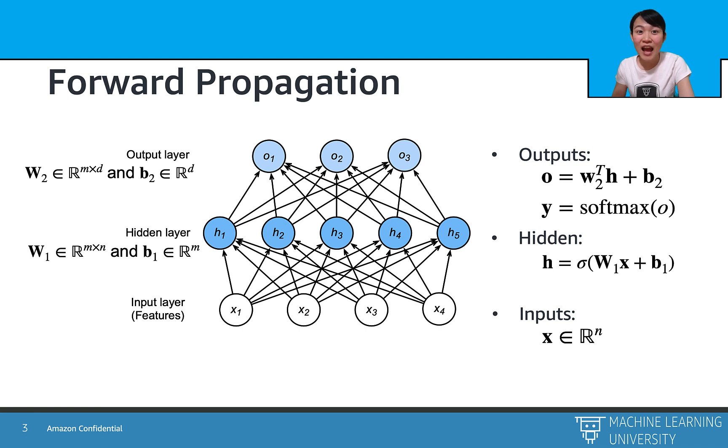Similarly, we can calculate the output layer by using the weights w2 times the previous layer outputs, which is the hidden units h, then plus bias b2. After that, we apply the softmax function to obtain the final output y. As we can see, the inputs are flowing from the input layers to the output layers, and we call the process forward propagation.